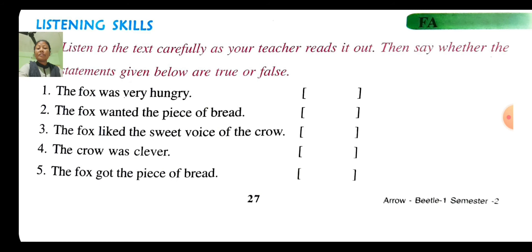The fox flattered the crow again and again to sing and dance, one at a time. Luckily, the piece of bread fell from the crow's beak and the fox picked up the piece of bread and walked away. So the statement 'the fox got a piece of bread' is true. Write in the bracket T-R-U-E, true.